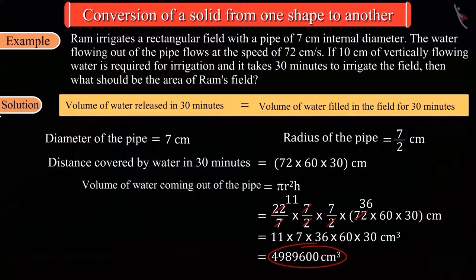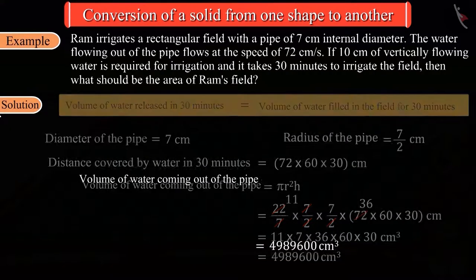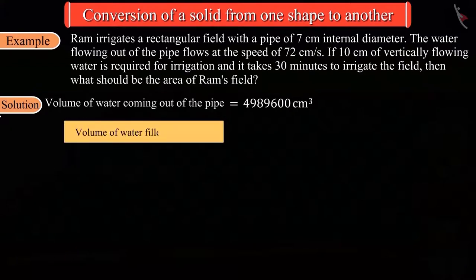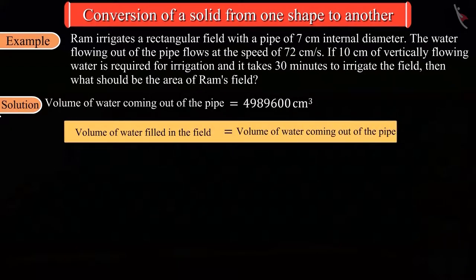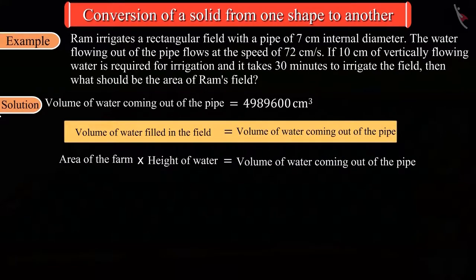Now after watering the field, the height of the water becomes 10 centimeters. We know that the volume of water coming into the field is equal to the volume of water released from the pipe, and we also know that the volume of water filled in the field is equal to the product of the area of the field and the height of water. So now we have to find the area of the field.